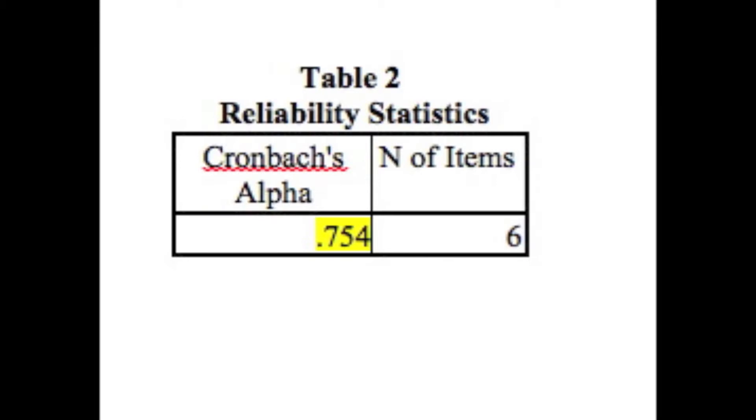The Cronbach's alpha test calculated to make sure that there were no outliers that were skewing the data in my questions. In other words, it tested for internal consistency to make sure that the questions were actually asking about the variables in the study. As long as the number for the test is above .7, the data is internally consistent. As you can see, my results were .754, which is above the threshold, and therefore valid.